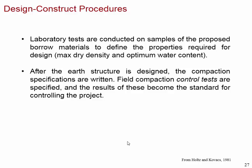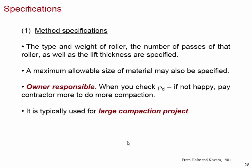For the design and construction procedure: laboratory tests are conducted on samples from the proposed borrow material to define the required properties for design. Field compaction control tests are then specified, and their results become the standard for controlling the project. You take borrow pit material to the lab, perform the standard Proctor test, get the compaction curve, determine the optimum water content and maximum dry density, and use that information to select equipment and define compaction control tests.